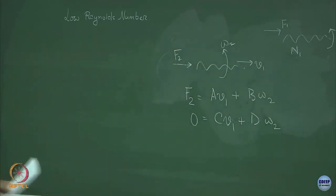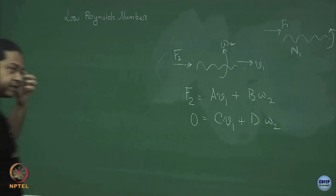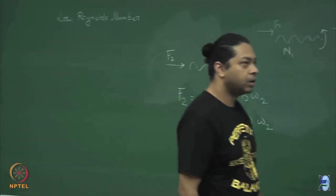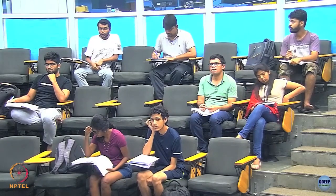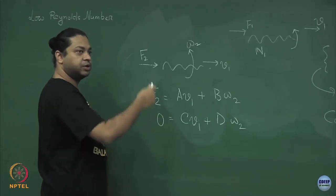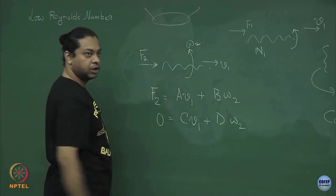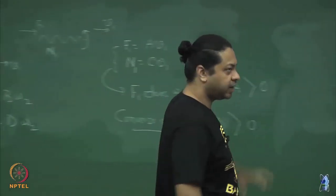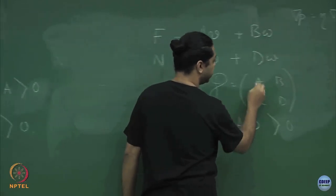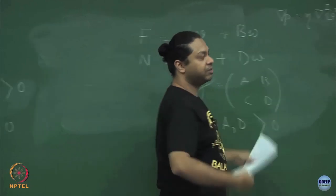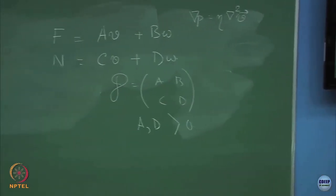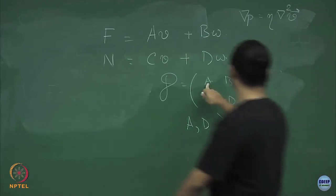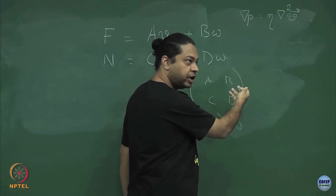The equations become: f2 = a·v1 + b·ω2, and 0 = c·v1 + d·ω2. For a specific example: if the object were a sphere, giving it a force causes it to move with velocity via 6πηR — it does not rotate — so a = 6πηR, b = 0. Giving it a torque causes rotation only, so c = 0 and d equals the appropriate rotational drag.